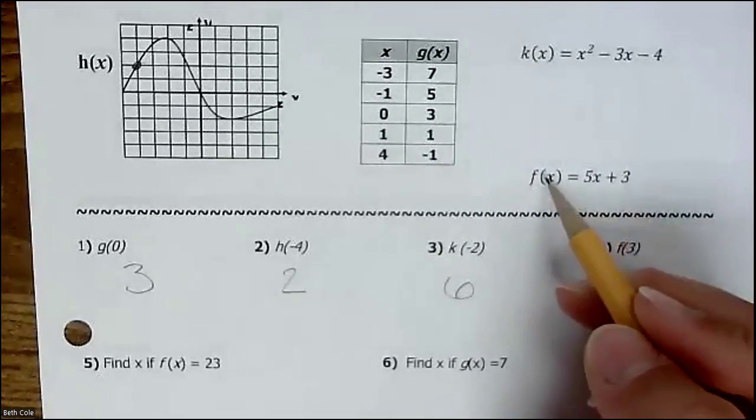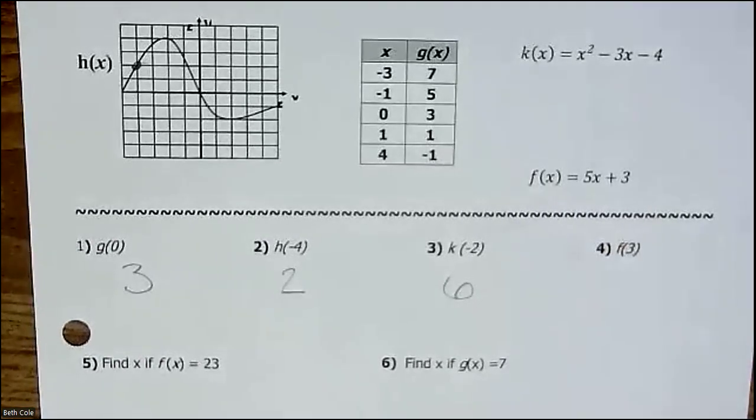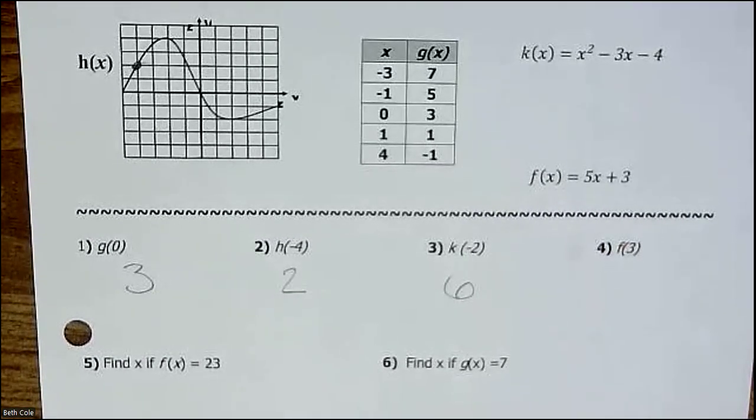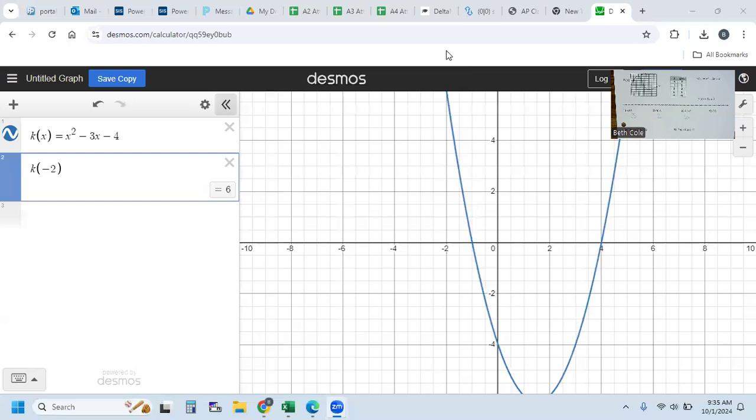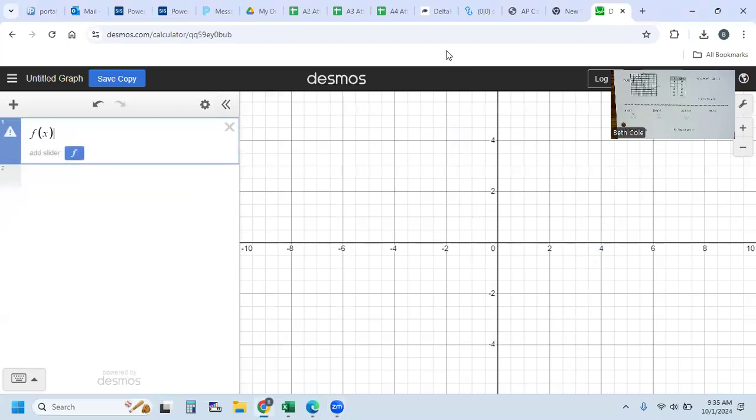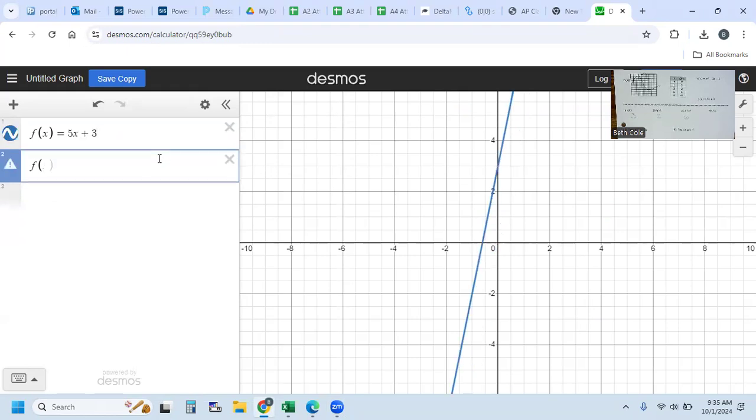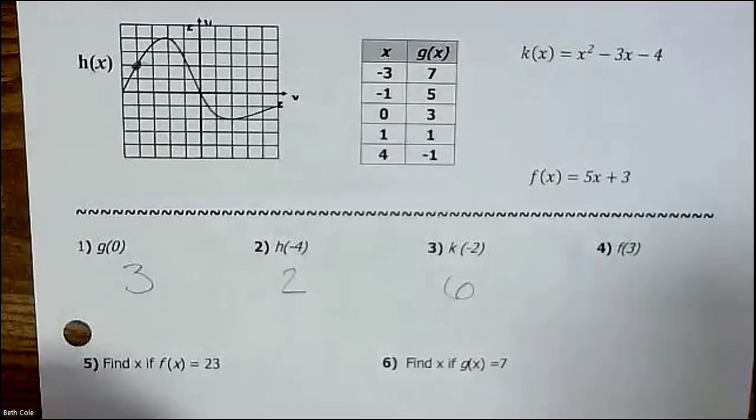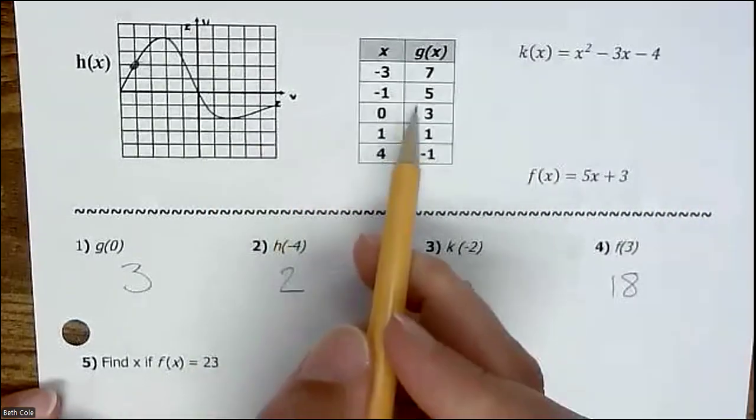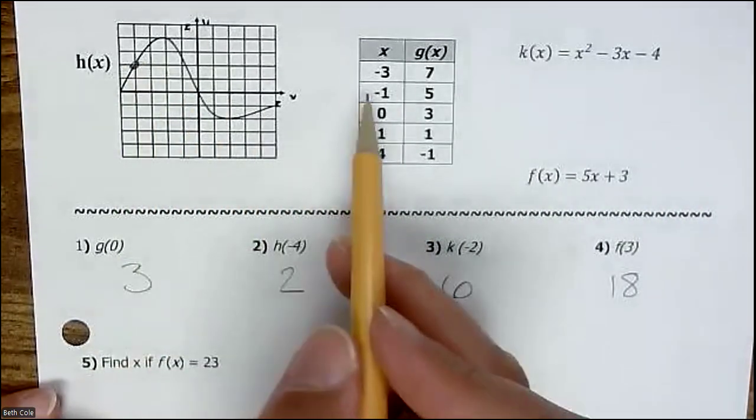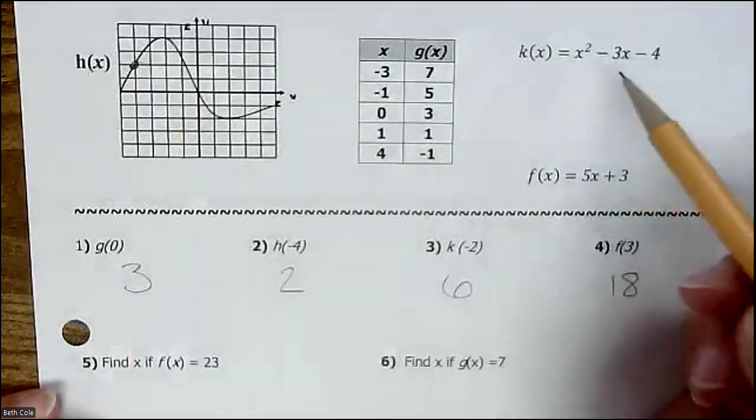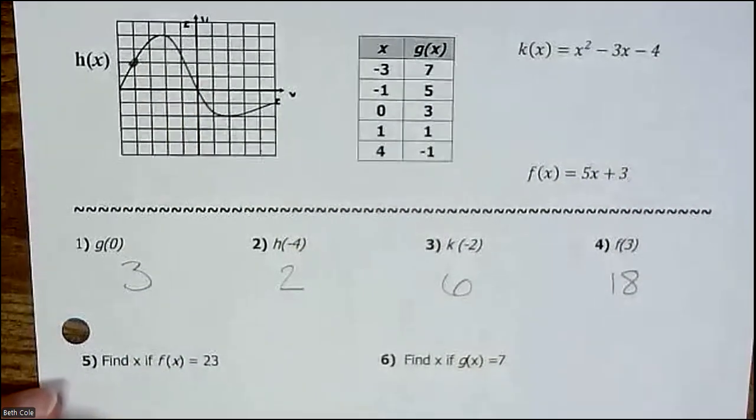This says f of 3, so we're looking at f of x. I'm going to type in f of x equals 5x plus 3, exactly like it says there. Then I'm going to type f of 3, and it tells me my answer is 18. When you have a table or a graph, you have to look at it and see where it matches up. For these ones, you can just put it in the calculator.